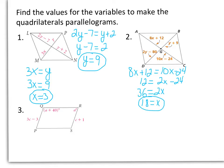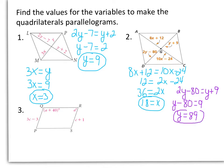To find y, I'm going to set my other two diagonals congruent to each other. So we have 2y minus 80 equals y plus 9. Subtracting y, I have y minus 80 equals 9. Adding 80, we get y equals 89. So if x is 18 and y is 89, our quadrilateral is a parallelogram.